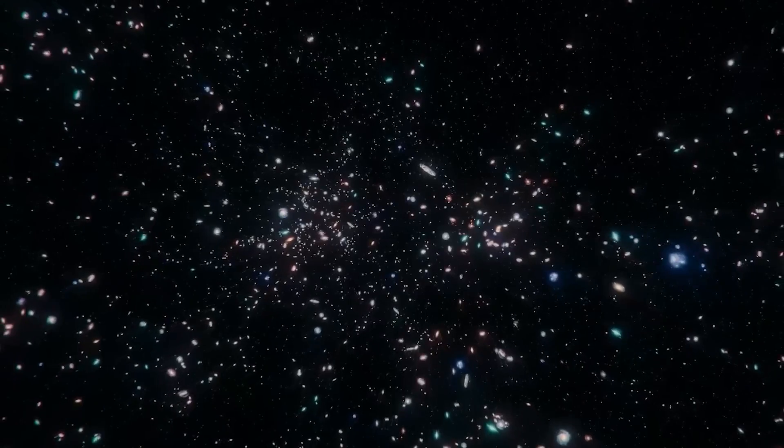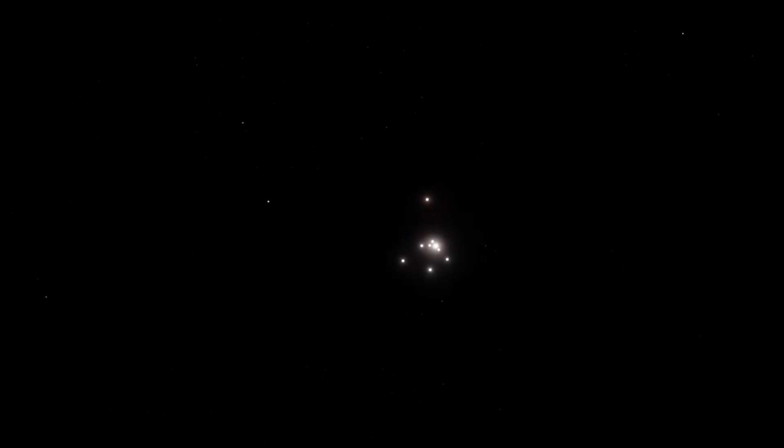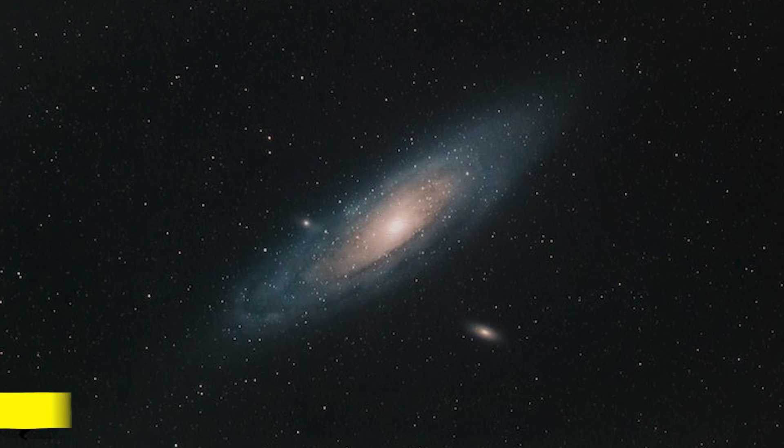We only discovered one galaxy inside the emptiness when we initially viewed it. We have only found a few dozen more since then. The Milky Way is part of the smaller Virgo supercluster, which has about 2,000 galaxies in it.